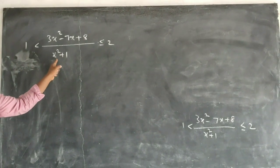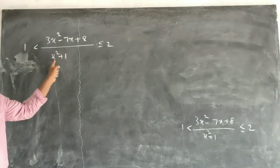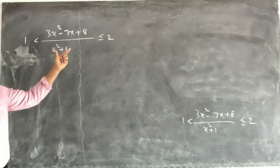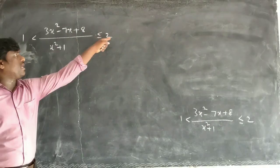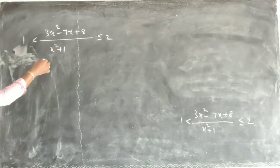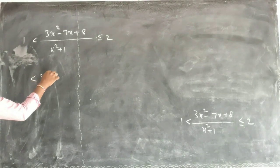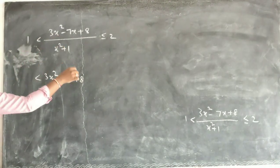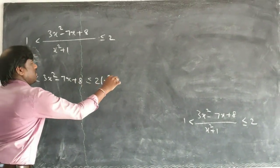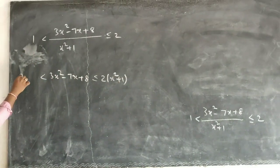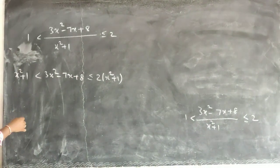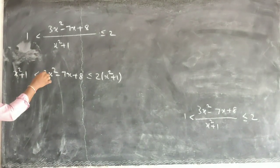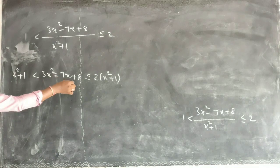x squared plus 1 is a quadratic and it is a positive number, because anything squared plus 1 is positive. So I can multiply both sides. If I multiply both sides, I am going to get 3x squared minus 7x plus 3 on one side. I can multiply this side and that side — here 2x squared plus 1, and here x squared plus 1. So I can send all these things to one side.